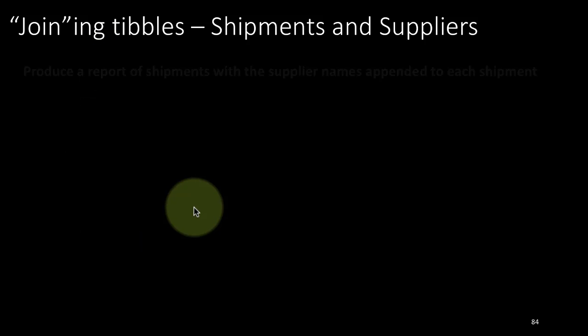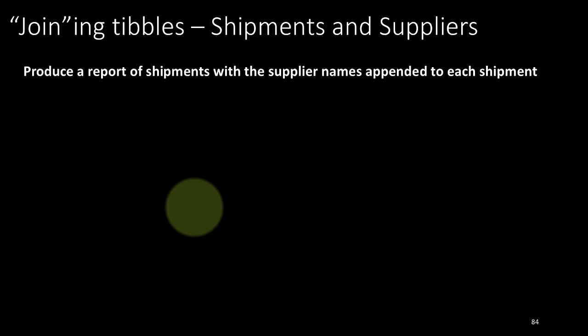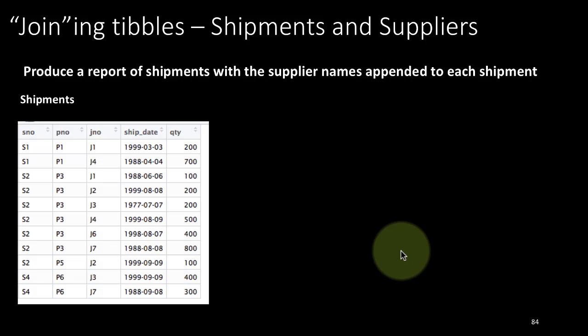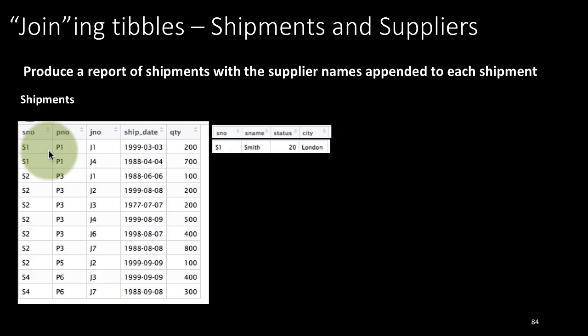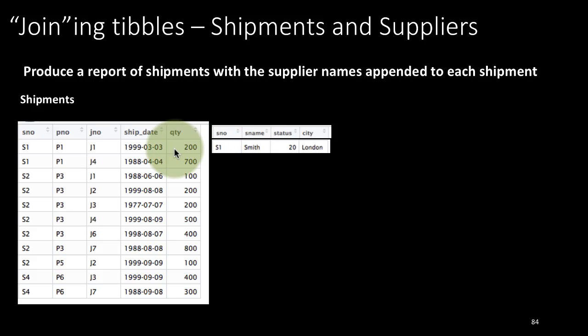We realized that to answer those questions we had to combine data from the shipments table and the suppliers table — we joined the two tables to get the answer. Let's understand what exactly joining is and how it works. The task: produce a report of shipments with the supplier names appended to each shipment. Right now the shipments table only has the supplier number, and what we want to do is also append the supplier name to each shipment.